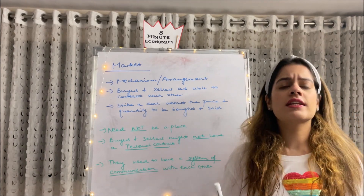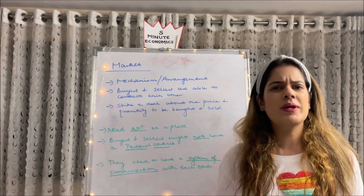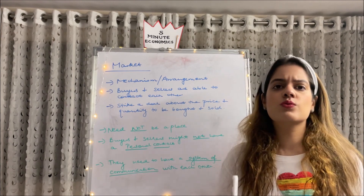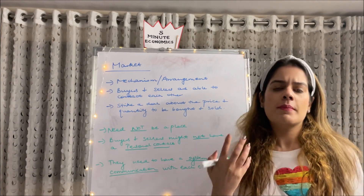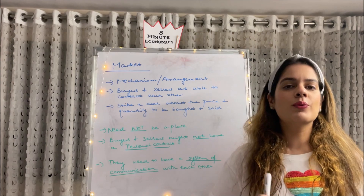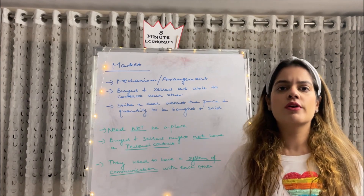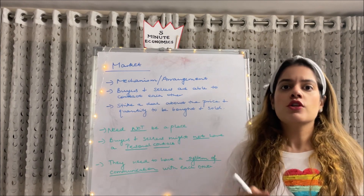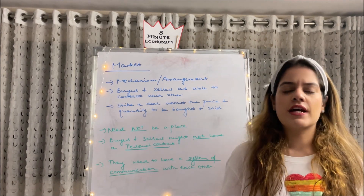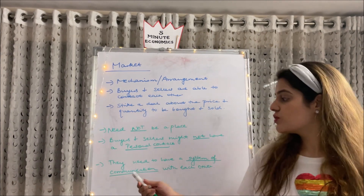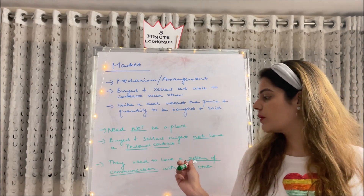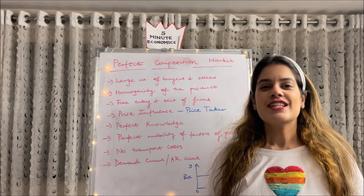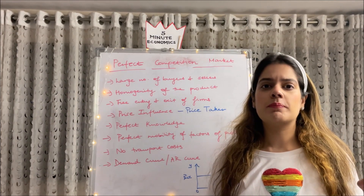Secondly, it's not necessary that buyers and sellers have to be in physical contact with each other. We buy goods online — we don't always know who the seller is. For example, buying from Amazon, we are not in direct contact with a buyer or seller, but we have a system of communication through an app or website. So a system of communication between buyers and sellers is essential. These are the key features of a market.